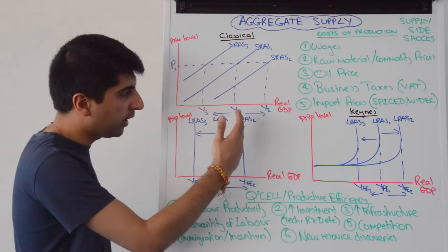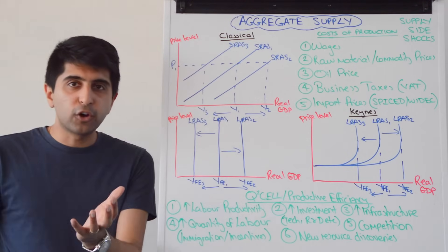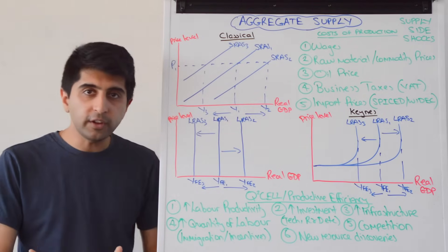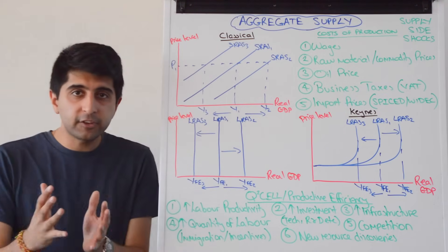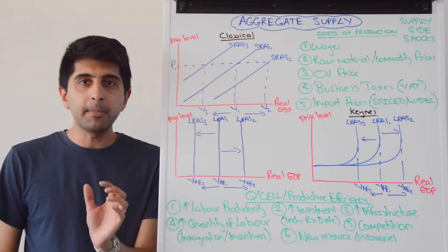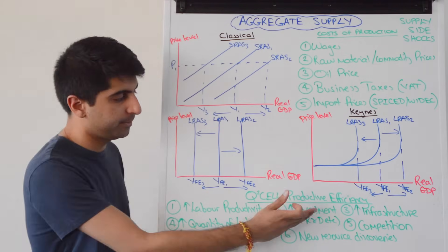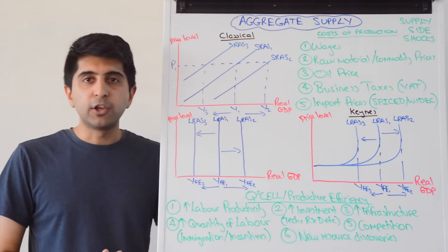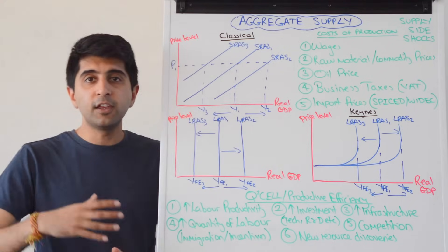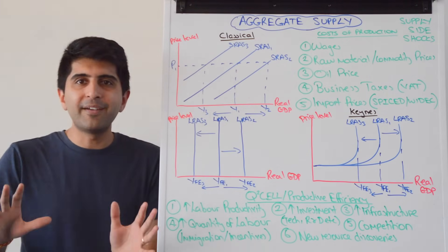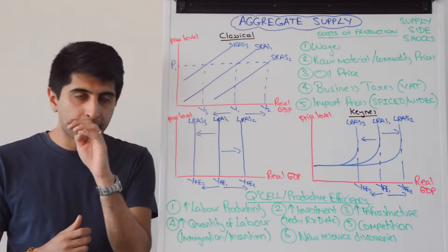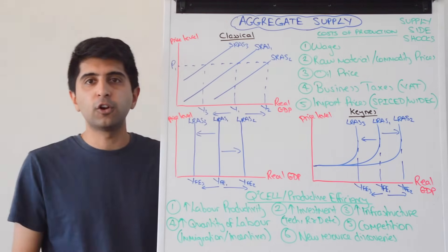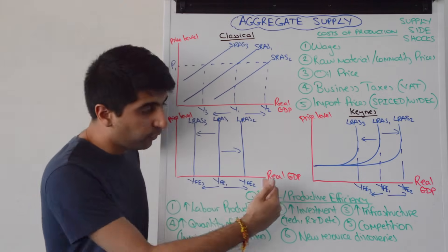What factors could cause that? Labour productivity improving will increase the quality of labour, shifting LRAS to the right. An increase in investment throughout the economy — when firms spend money on capital goods — is another factor. Always give examples: technology advances, R&D spending, new factory development, new machines, machine upgrades, new software, or a fleet of new vehicles. That increases the quantity and quality of capital, and over time can improve productive efficiency as long-run costs of production for firms decrease, shifting LRAS to the right via all three channels.